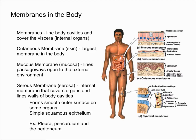In this video I'm going to talk about the different types of membranes in your body. A membrane is essentially something that lines body cavities and covers the viscera, also known as the internal organs. We're going to talk about three types of membranes: the cutaneous, the mucous, and the serous.